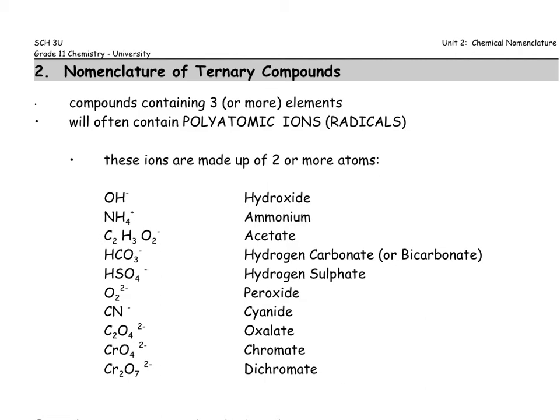In today's lesson, we're going to continue to talk about nomenclature, but we're going to extend that to some more complex compounds called the ternary compounds or tertiary compounds. Unlike the binary compounds, you should expect to see more than two atoms of different elements contained in these compounds.